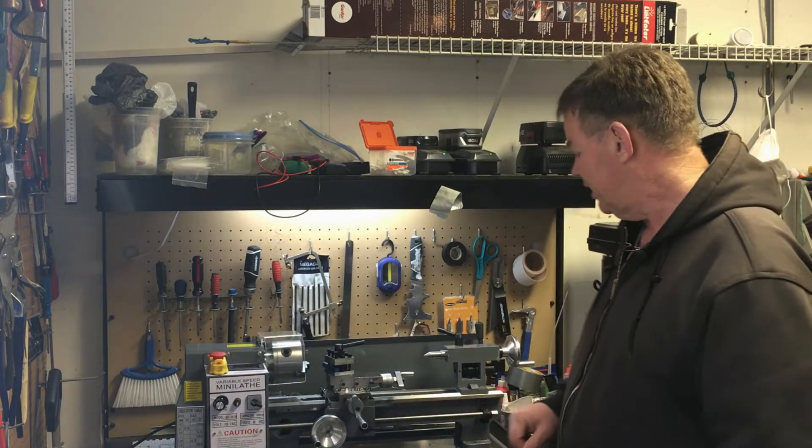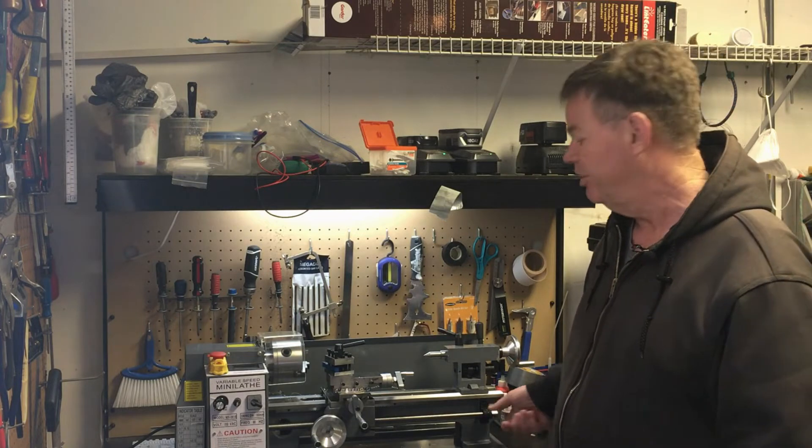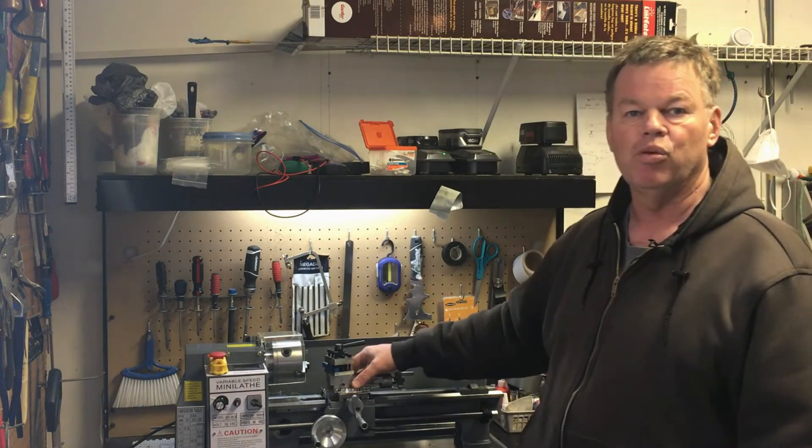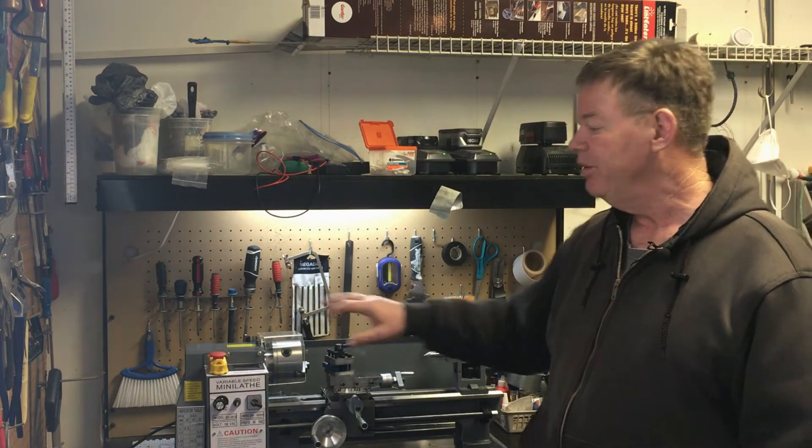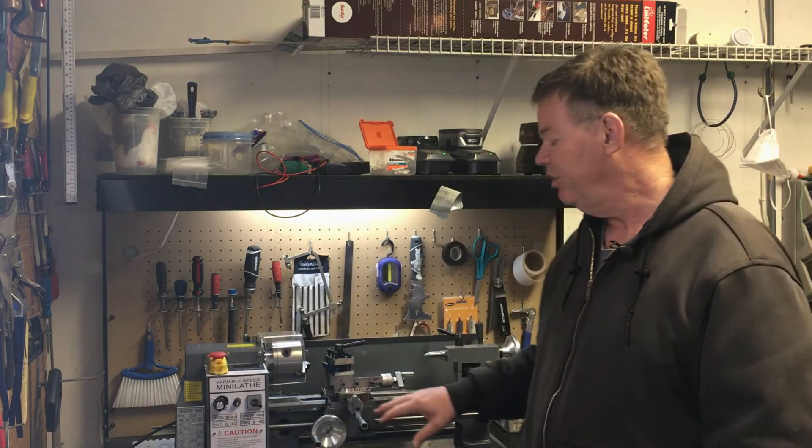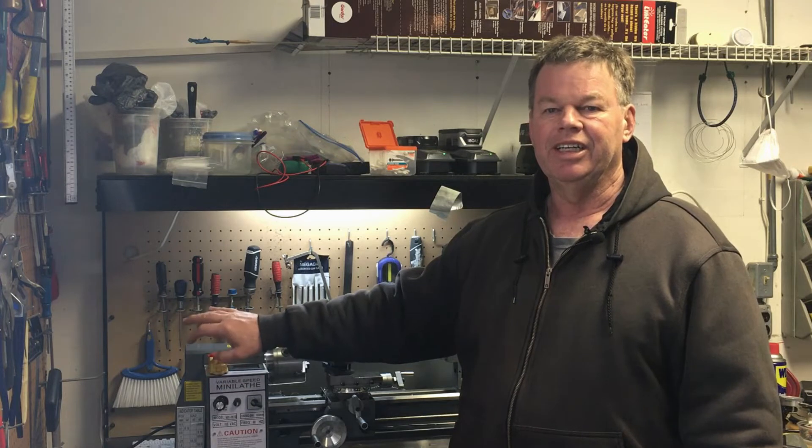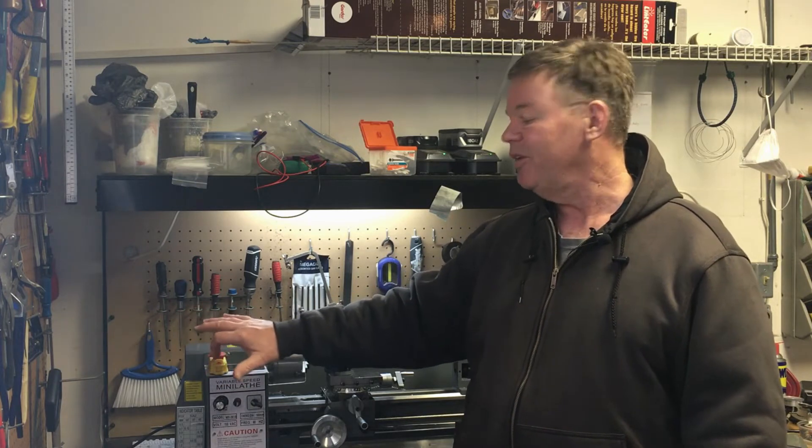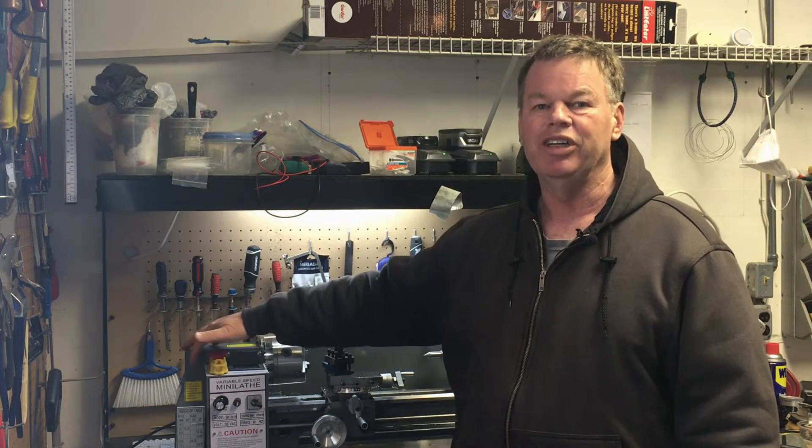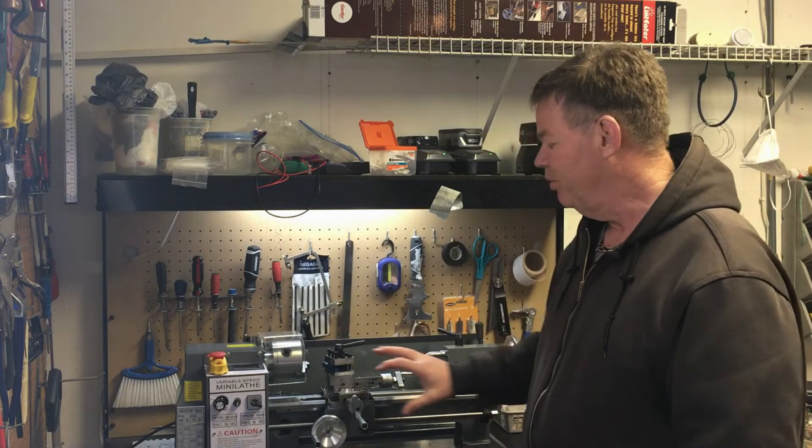But what I want to do is set up a stepper motor to turn this lead screw here so this carriage goes backwards and forwards. Normally you'd use the gearing and the head here to do that, but that's kind of complicated to get the gearing right, and these gears don't mesh that well anyway, so I'd rather avoid using the gears in the head for moving the carriage.